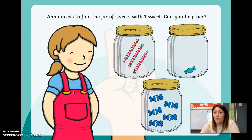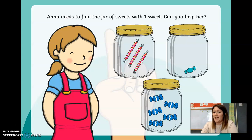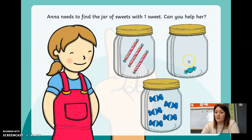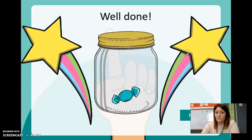Anna needs to find the jar of sweets with one sweet — can you help her? Count how many are in each jar. This one: one, two, three — that is not number one, it has three sweets. This one: one, two, three, four, five — that's not number one either, it has five sweets. Let's check this jar — one. Well done if you got that correct, give yourself a marshmallow clap!